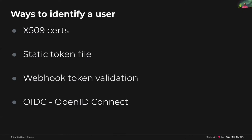The API server has multiple configurable ways to identify and authenticate users. There are basically four different options out of the box: client certificates, static tokens, an external webhook service to validate a token, and OpenID Connect — which is kind of like OAuth with some nuances.